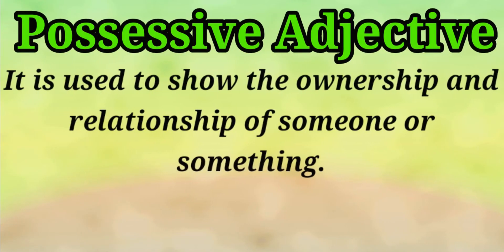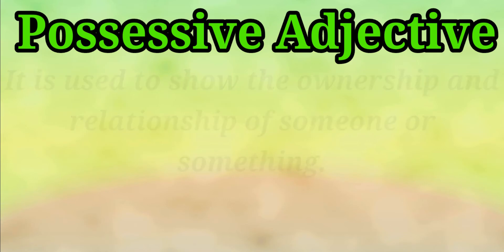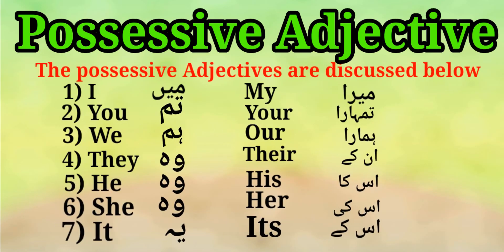Possessive adjective. It is used to show the ownership and relationship of someone or something. The possessive adjectives are: number one: I - my. Number two: you - your. Number three: we - our. Number four: they - their. Number five: he - his. Number six: she - her. Number seven: it - its.